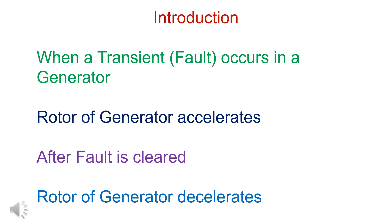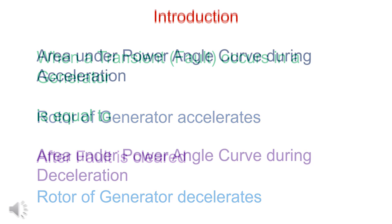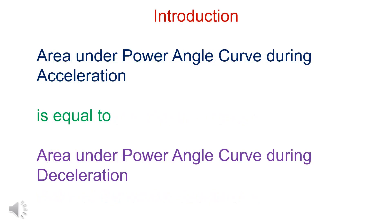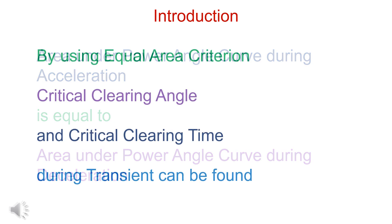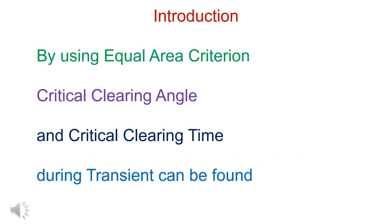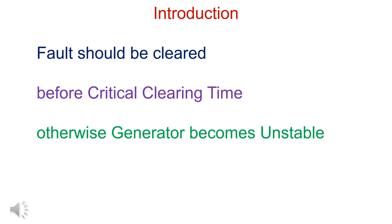During a transient, the generator rotor accelerates. After the transient subsides, it decelerates. The area under the power angle curve during acceleration is equal to the area during deceleration. This is called the equal area criterion. Using it, the critical clearing angle and critical clearing time are found. Faults should be cleared before the critical clearing time; otherwise, the generator will become unstable.